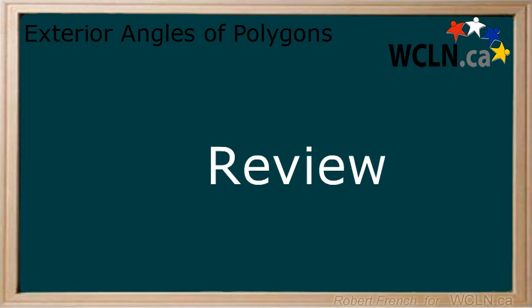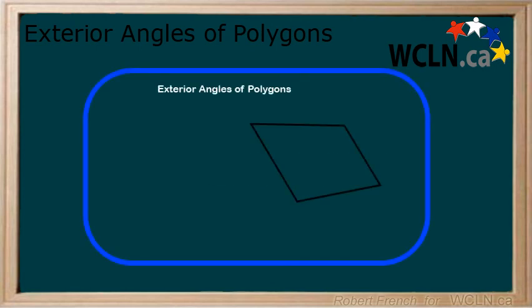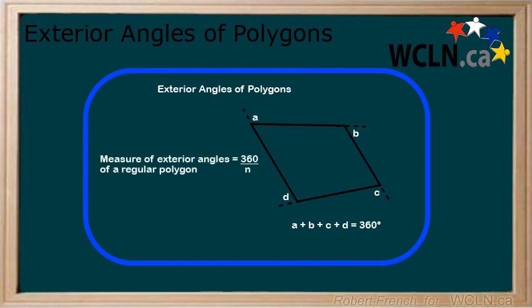In this lesson, you learned that an exterior angle of a polygon is found by extending the line of a polygon. You also learned that the sum of these exterior angles is 360 degrees. Finally, you learned that you can find the measure of an exterior angle of a regular polygon by dividing 360 degrees by n, where n is the number of sides the polygon has.